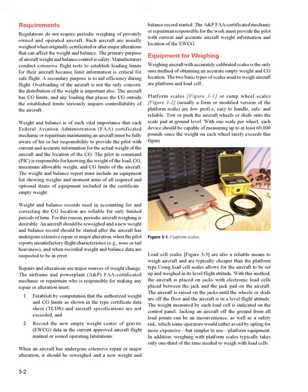Load cell scales (figure 3-3) are also a reliable means to weigh aircraft and are typically cheaper than the platform type. Using load cell scales allows for the aircraft to be set up and weighed in its level flight attitude. With this method, the aircraft is placed on jacks with electronic load cells placed between the jack and the jack pad on the aircraft. The aircraft is raised on the jacks until the wheels or skids are off the floor and the aircraft is in a level flight attitude. The weight measured by each load cell is indicated on the control panel. Jacking an aircraft off the ground from all load points can be an inconvenience, as well as a safety risk, which some operators would rather avoid by opting for more expensive but simpler-to-use platform equipment.